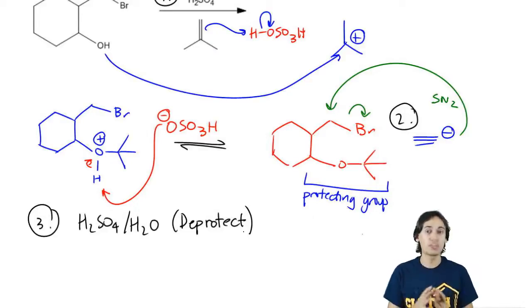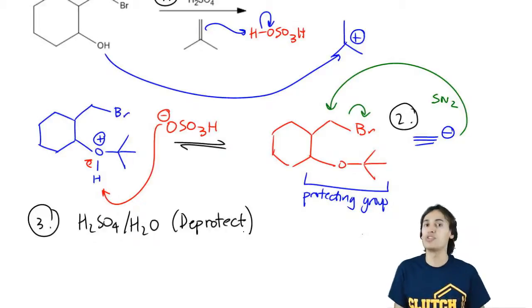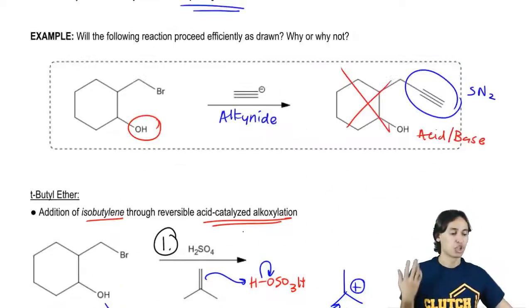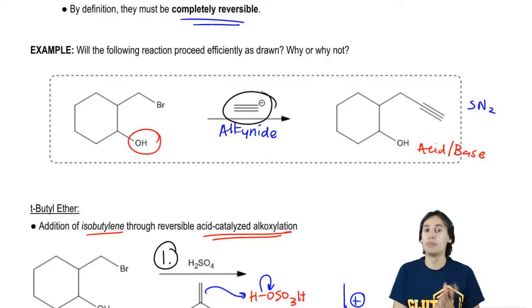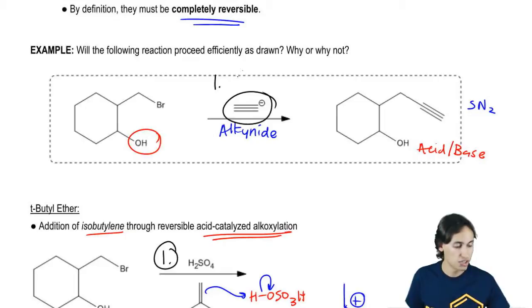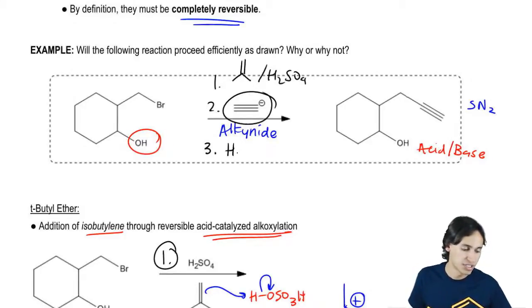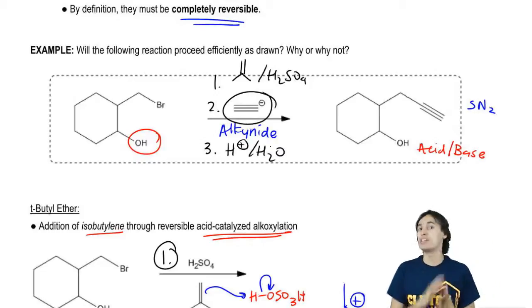So I hope that makes sense, guys. For the purposes of your test, you will need to know when you have to use a protecting group and when you don't. In terms of synthesis, your professor could ask you, hey, how do I make this final product? And just using that one reagent wouldn't be enough. You would need to use first, you need to protect. Second, you could use your alkanide. And then third, you would have to deprotect using acid and water. So I hope that made sense, guys. Let me know if you have any questions. If not, let's go ahead and move to the next topic.